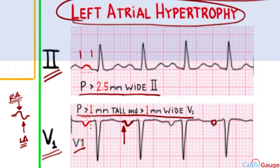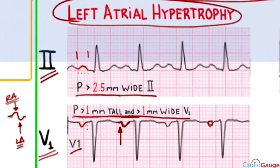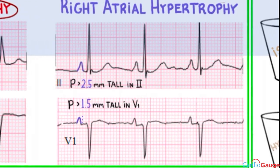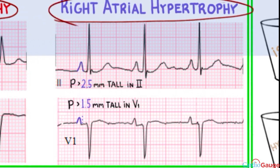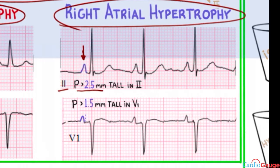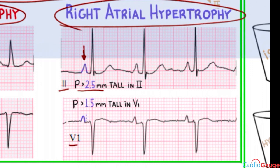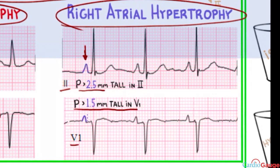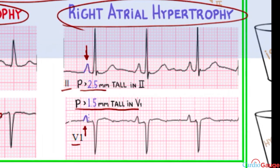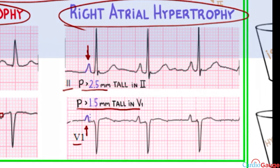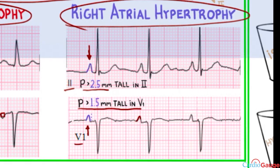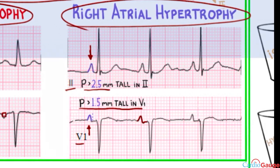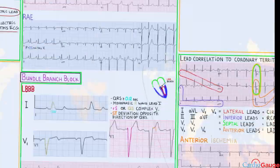For right atrial hypertrophy, the criterion in lead 2 is a tall P wave greater than 2.5 millimeters. In V1, the criterion is greater than 1.5 millimeters tall. The P wave still shows the right atrium depolarizing first and then the left atrium, though it can be hard to distinguish on the tracing.